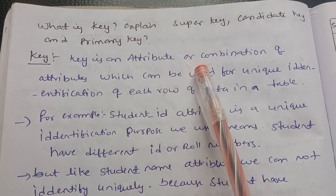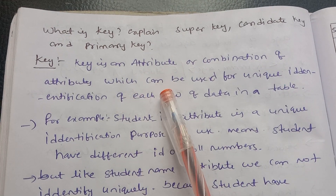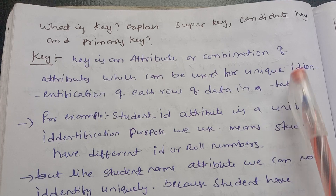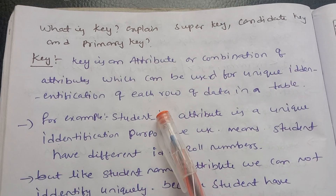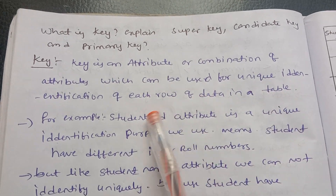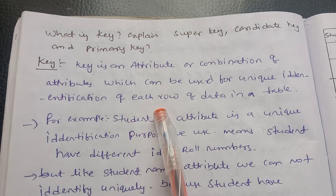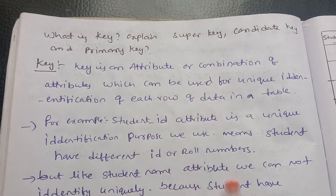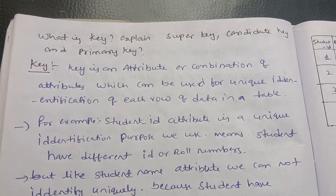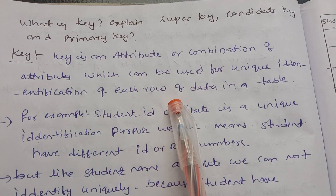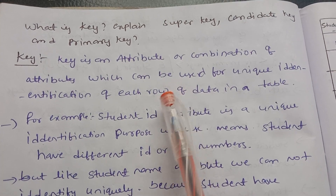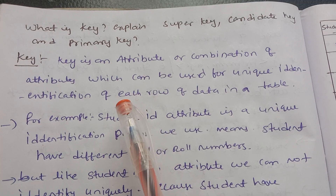A key is an attribute or combination of attributes which can be used for unique identification of each row of data in a table.